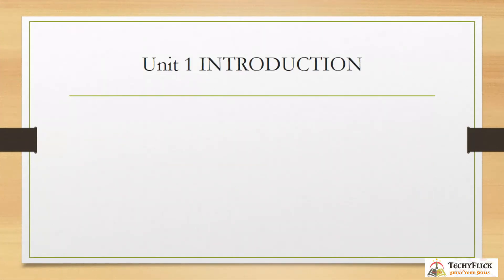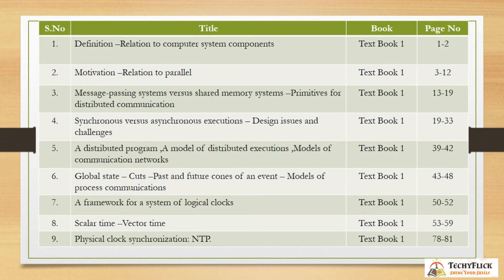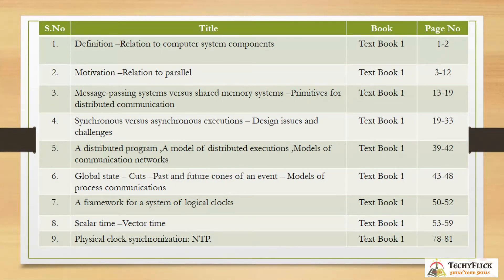Unit 1 is Introduction, with nine topics. First: definition and relation to computer system components, textbook pages 1 to 2. Motivation and relation to parallel systems, pages 3 to 12. Message passing systems versus shared memory systems, and primitives for distributed communication, pages 13 to 19. Synchronous versus asynchronous executions, design issues and challenges, pages 19 to 33. Distributed program and a model of distributed executions, models of communication networks, pages 39 to 42. Global state, cuts, past and future cones of an event, and models of process communication, pages 43 to 48.